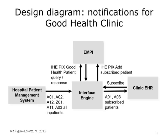When the interface engine receives a message from the hospital patient management system, it queries the EMPI to determine if the patient is a Good Health Clinic patient using the IHE patient cross-referencing (PIX) query. If the message is Z01, it transforms it into an A01 by changing the message type. If the message is A11, it transforms it into an A03 with discharge disposition set to 'admit canceled.' Whenever a new patient is added to the Good Health Clinic EHR, a message is sent via the interface engine to the EMPI using the IHE PIX add message. This diagram and narrative would be included in the design specification so builders can develop necessary filters and transformations.